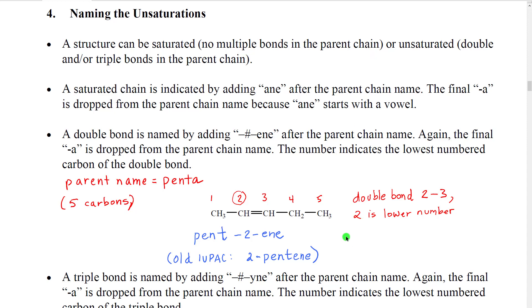Next we need to name our unsaturations. A structure can be saturated, which would have no multiple bonds in the parent chain, or it could be unsaturated, which would have double and/or triple bonds in the parent chain.